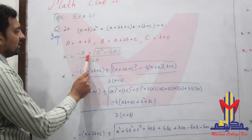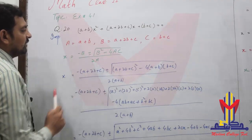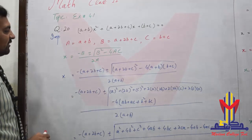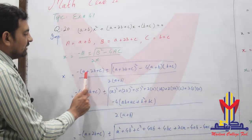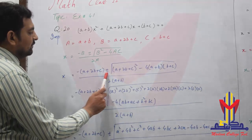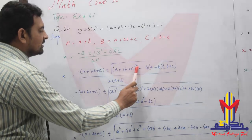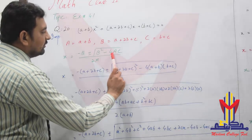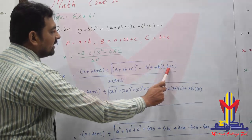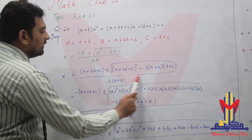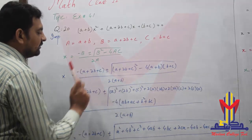Now we apply the quadratic formula: x = [-B ± √(B²-4AC)] / 2A. So we write: x = [-(A+2B+C) ± √((A+2B+C)² - 4(A+B)(B+C))] / [2(A+B)].